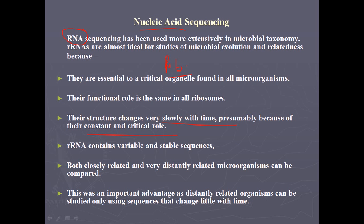Cells do not want to change the structure of ribosomes whenever any mutation takes place, so ribosomes are less vulnerable to mutations. rRNA contains both variable and stable sequences, and the stable sequences are called signature sequences. Both closely related and very distantly related microorganisms can be compared using rRNA because these signature sequences are found in both earlier and newly developed organisms. This is an important advantage since distantly related organisms can be studied using a sequence that changes little with time.